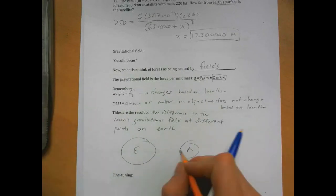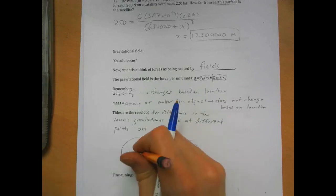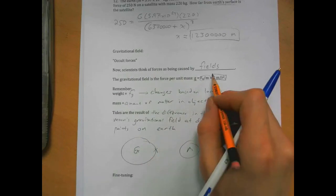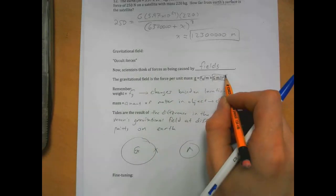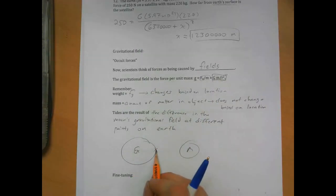Now, let's think about moon's gravitational field at the surface of the earth here versus at the center of the earth here. Where will the gravitational field be stronger? Well, the gravitational field is gm over r squared, right? So as r gets bigger, gravitational field gets smaller.